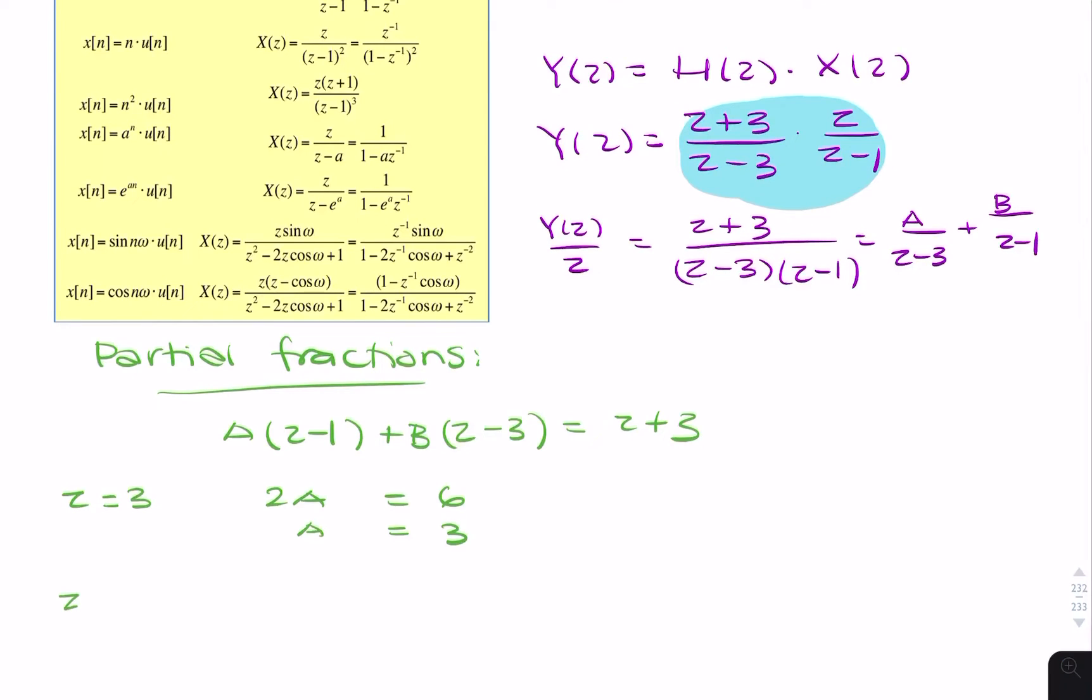Taking z equals 1 gives minus 2b equals 4, so b equals minus 2.